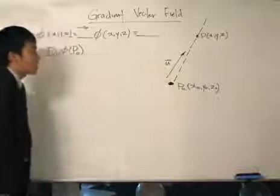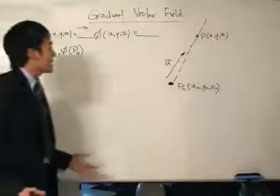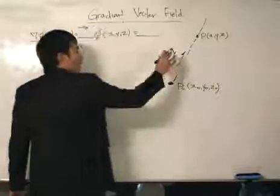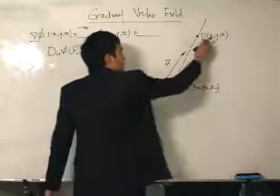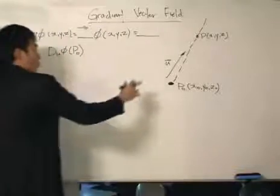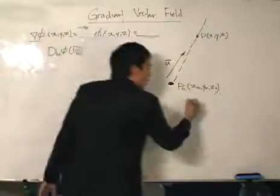P₀ is traveling to P, and P is denoted by x, y, z parallel to the unit vector u. So what do we know about vectors that are parallel? That means they are a scalar multiple of each other. We can find a vector from P₀ to P.